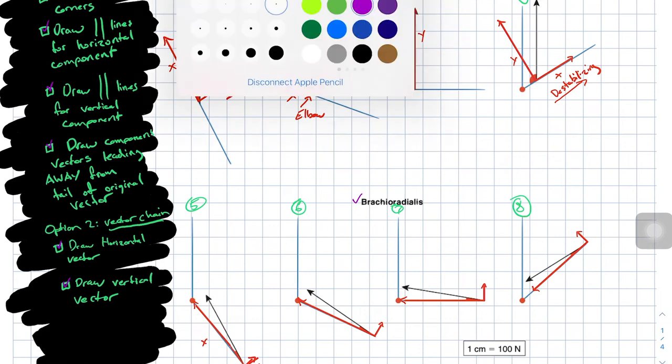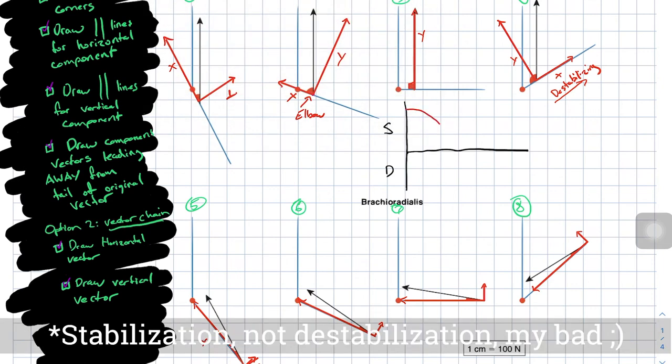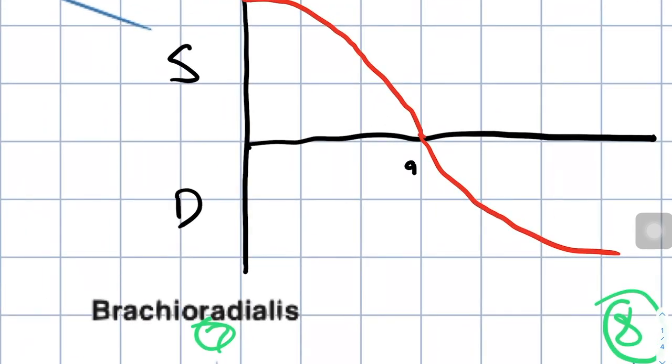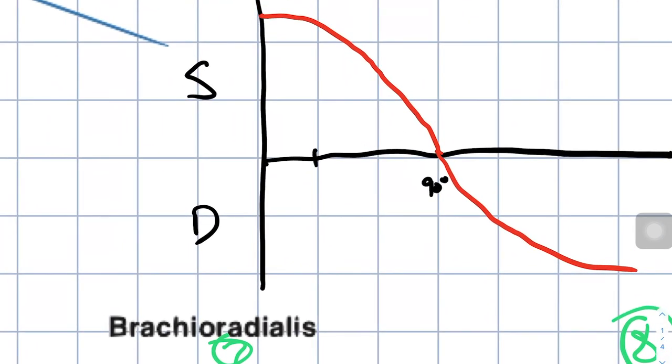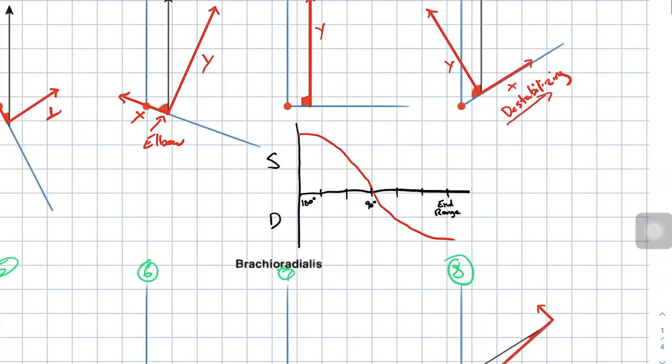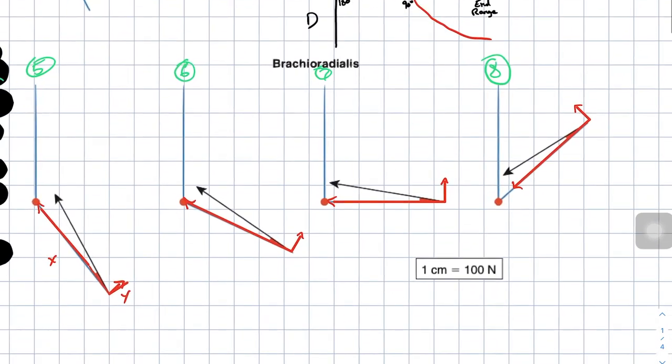In fact, if we were to graph it, it might look something like this where we have stabilization and destabilization. We start off where the biceps brachii force is creating a lot of stabilization. But as you go through its range of motion, that decreases until you're at 90 degrees, and then it becomes a destabilizing force. This point where it switches would be at about 90 degrees. If we had to graph it, it might look something like that—I just kind of made that up. But we see that at some point, it switches from stabilizing to destabilizing.